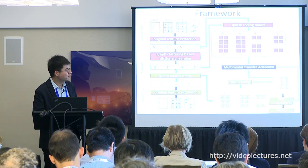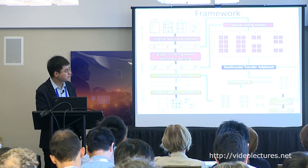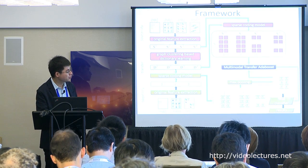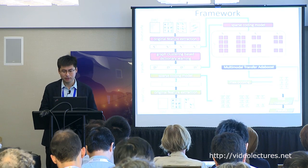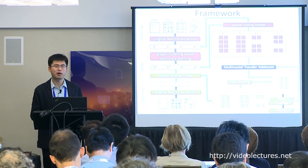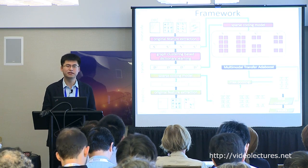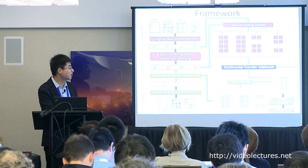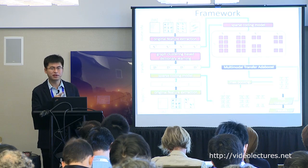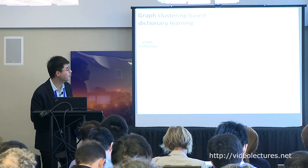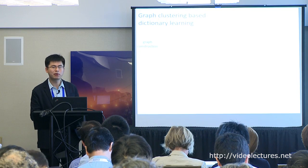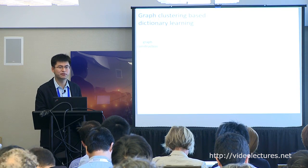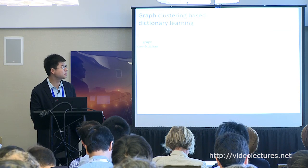In summary: what we transfer is the knowledge of relationships between different kinds of data, and we project data from different cities into a common space so they can share the same training instances.